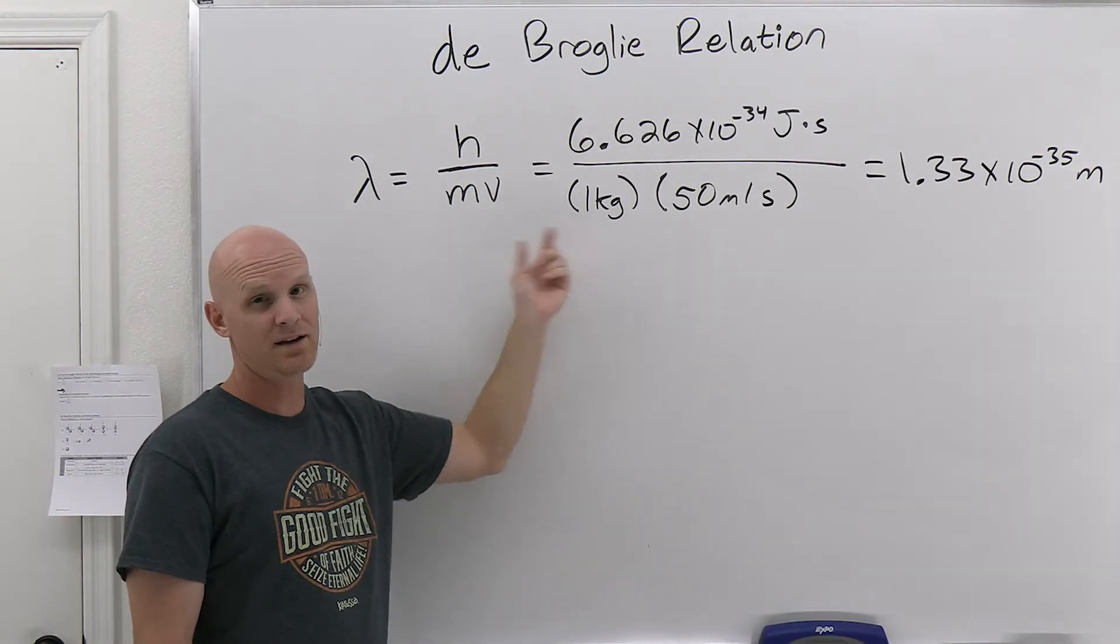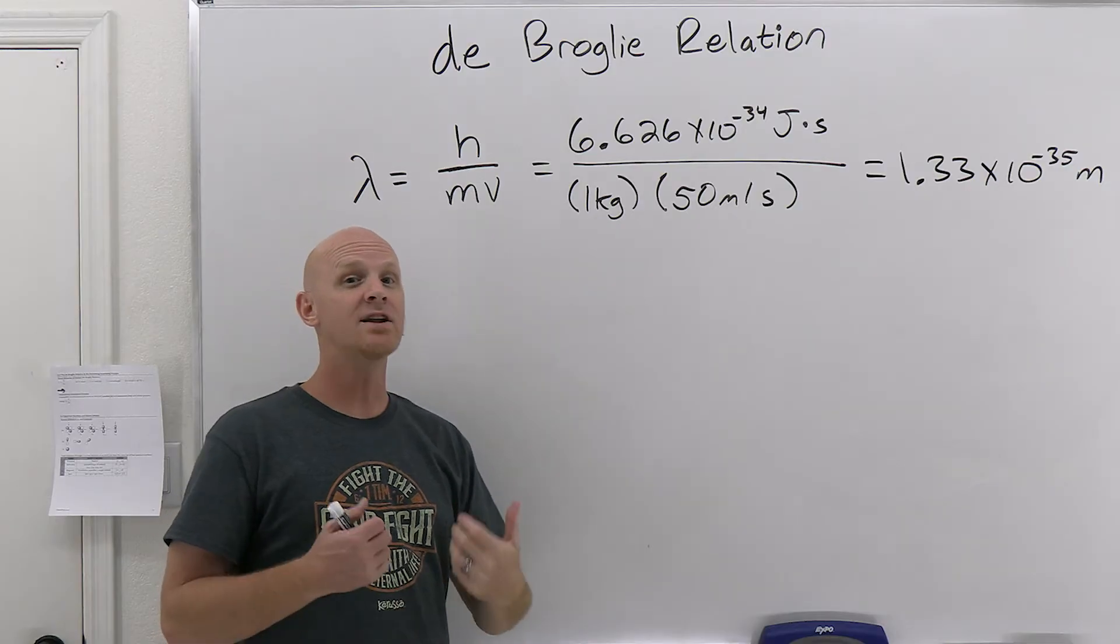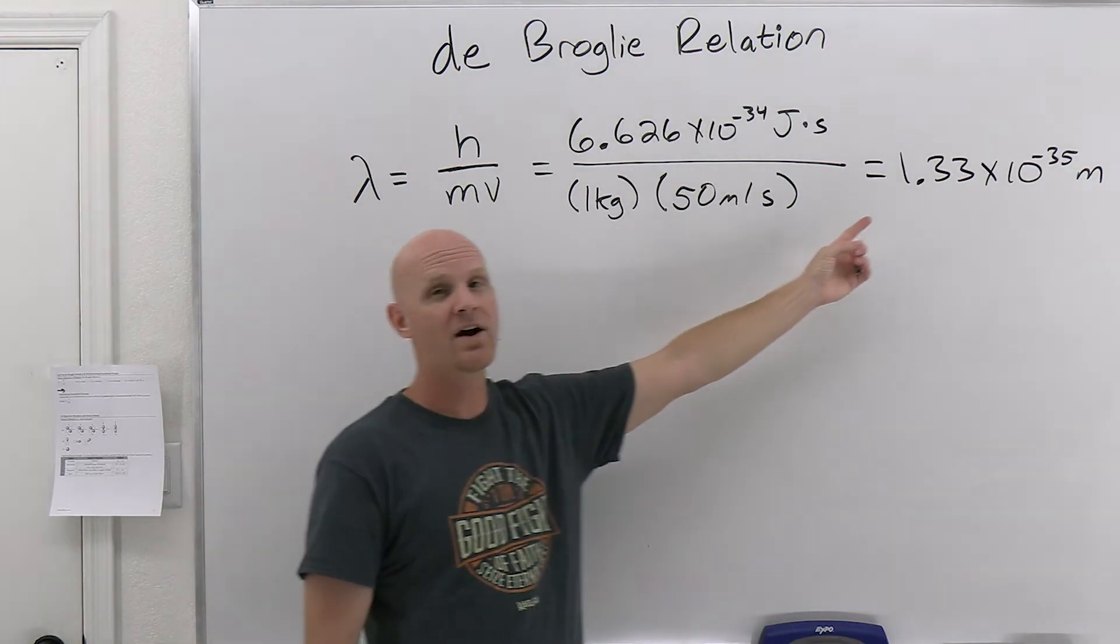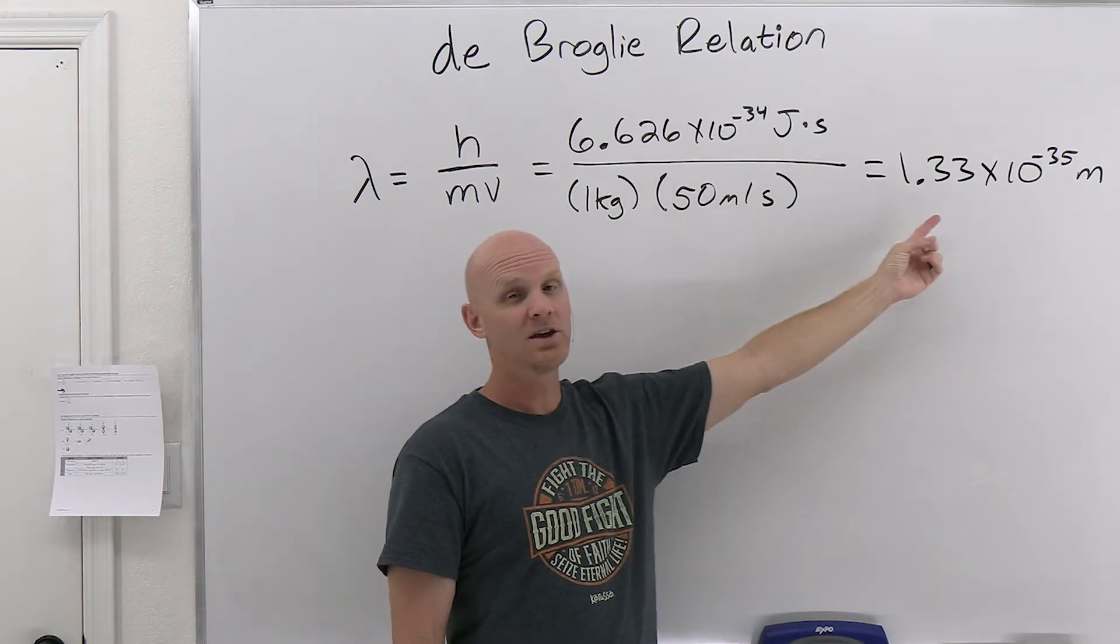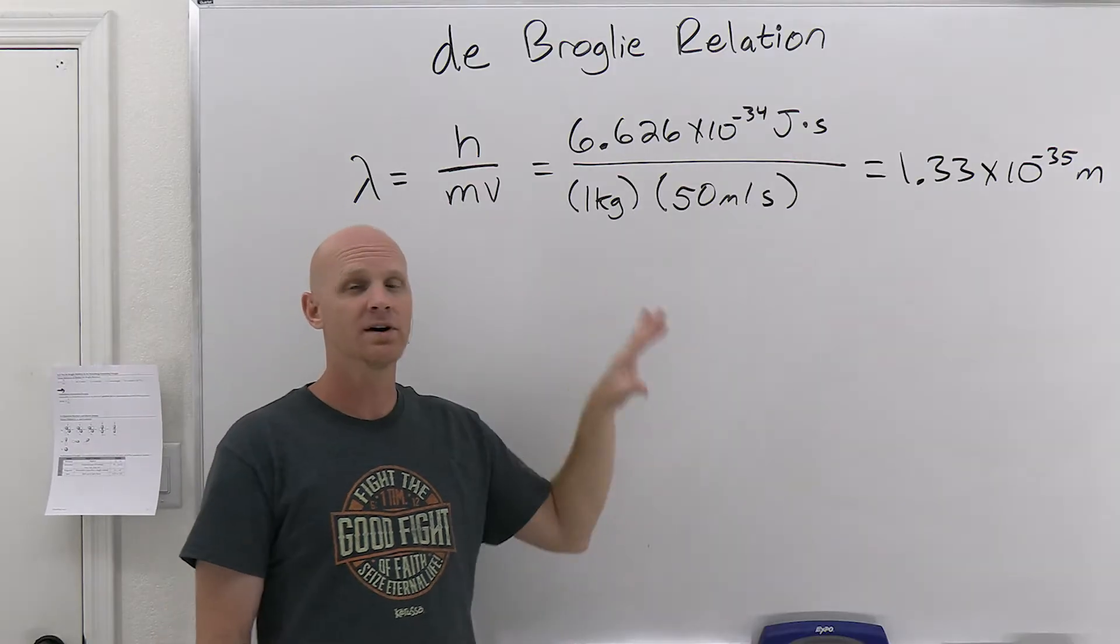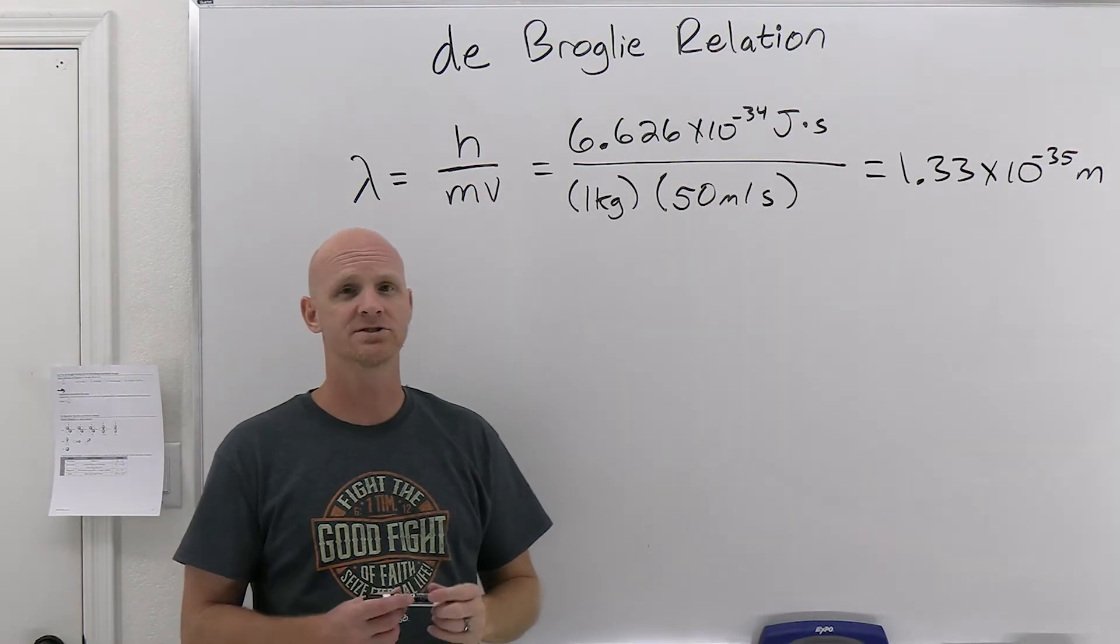which instead of weighing one kilogram weighs like 9.11 times 10 to the negative 31 kilograms. It's so small that all of a sudden it's going to work out to being, when you divide by that small number, you end up with a wavelength that can actually be measured, that's actually detectable. And we can corroborate de Broglie's relation.